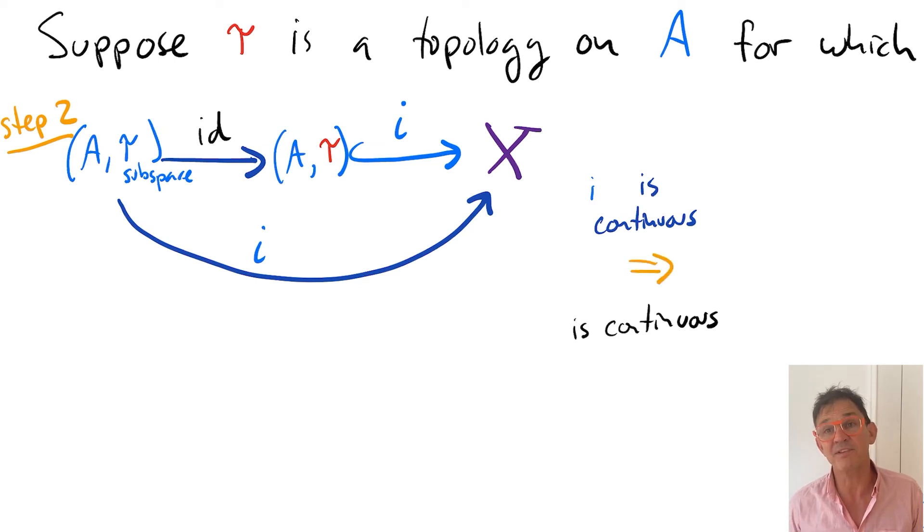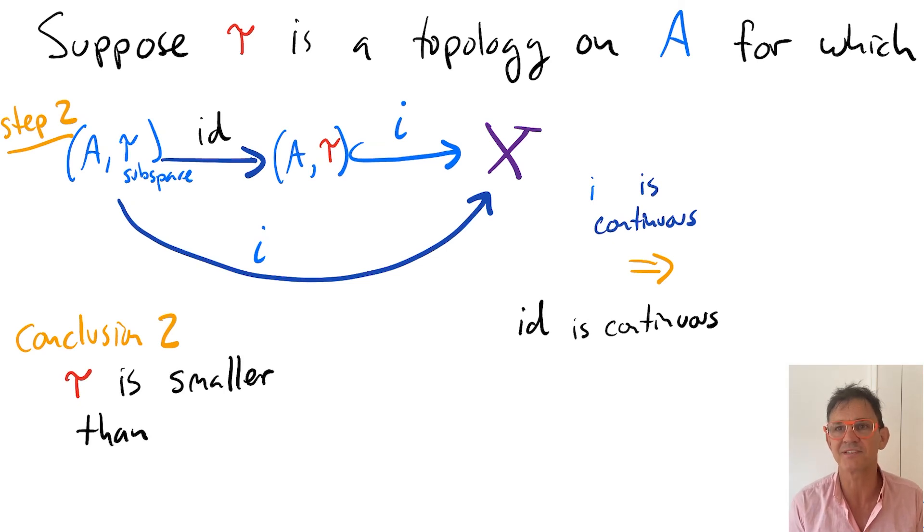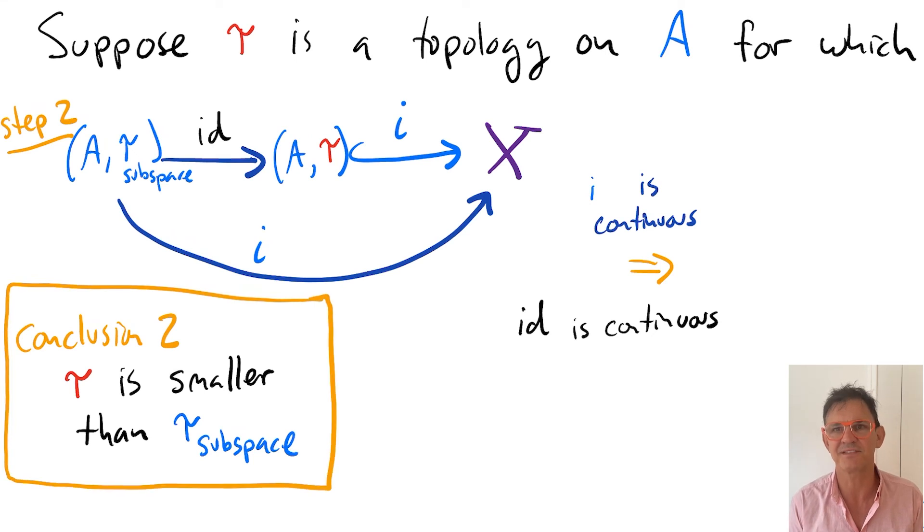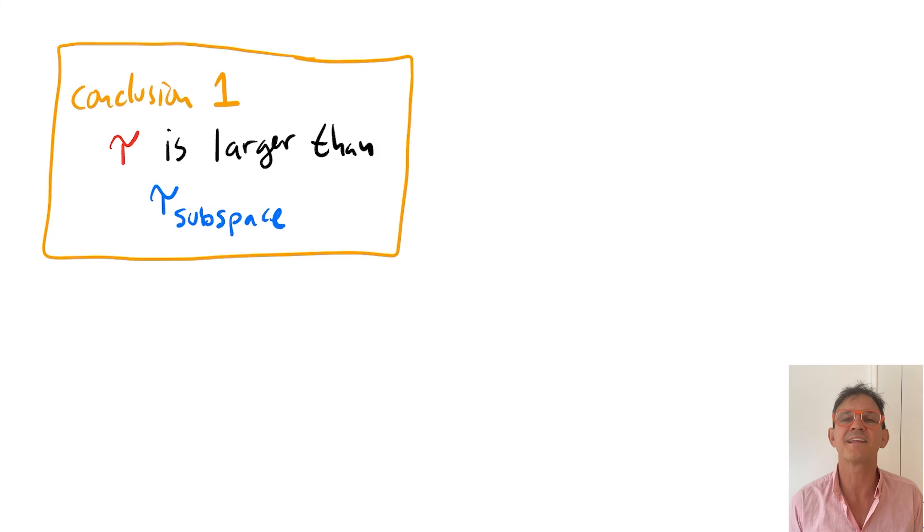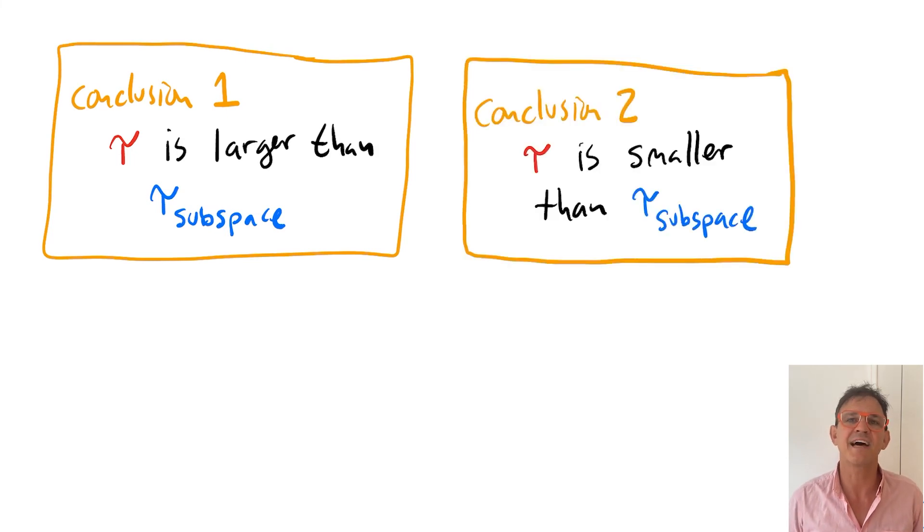Then the property that tau satisfies implies that the identity map is continuous, which means that every set in the topology tau is also in the subspace topology. That is, tau is smaller than the subspace topology. Putting these two conclusions together allows us to see that tau must be equal to the subspace topology.